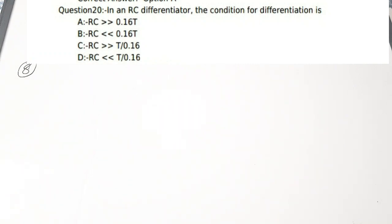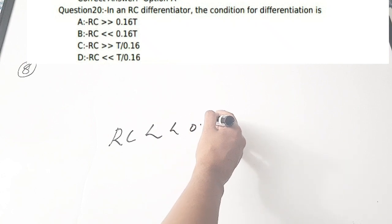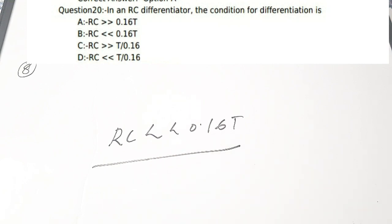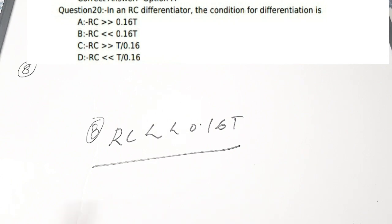The eighth question: in an RC differentiator, the condition for differentiation is — (a) RC >> 0.16T, (b) RC < 0.16T, (c) RC > T/0.16, (d) RC < T/0.16. Correct answer is option B — for a differentiator to work properly, the RC time constant must be less than 0.16 times the time period T.